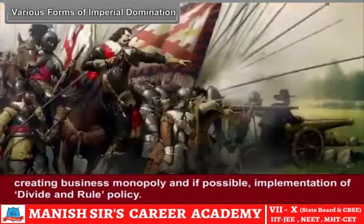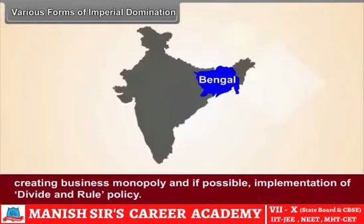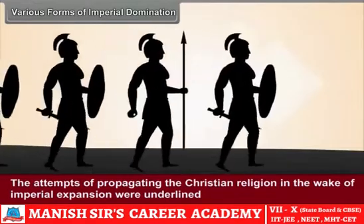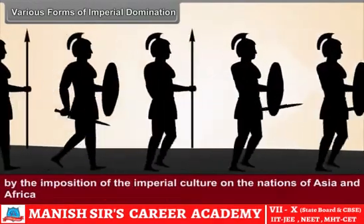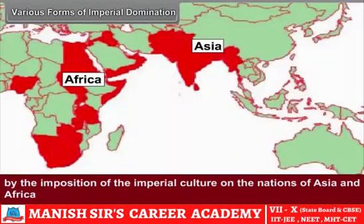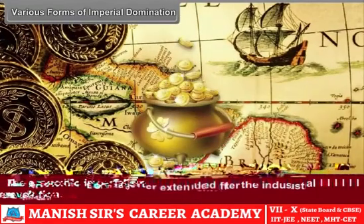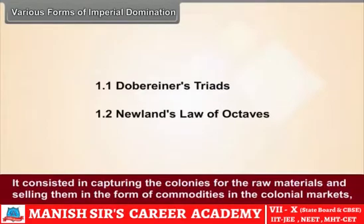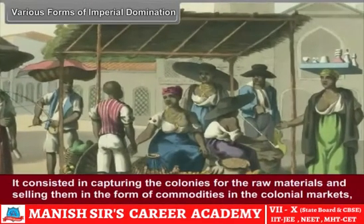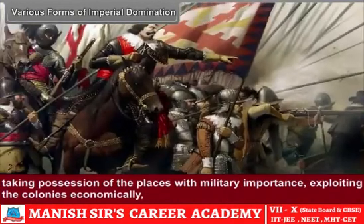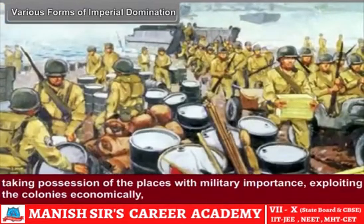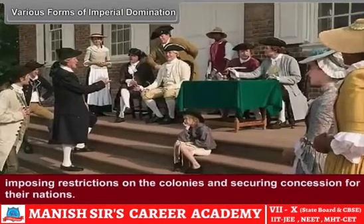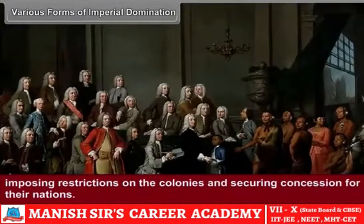Imperial domination also involved creating business monopoly and, if possible, implementation of the divide-and-rule policy. The attempts of propagating the Christian religion in the wake of imperial expansion were underlined by the imposition of imperial culture on the nations of Asia and Africa. The economic imperialism got further extended after the Industrial Revolution. It consisted in capturing the colonies for raw materials and selling them as commodities in colonial markets, taking possession of places with military importance, exploiting the colonies economically, improving the financial condition of the imperial nations themselves, and imposing restrictions on the colonies.